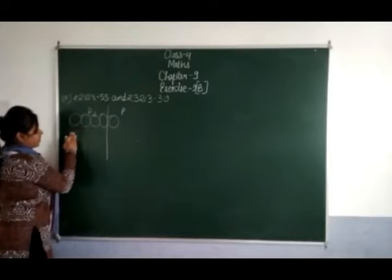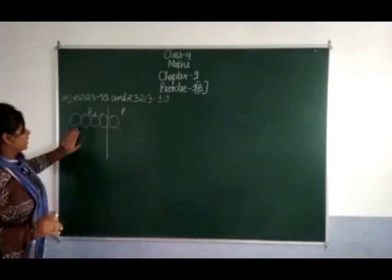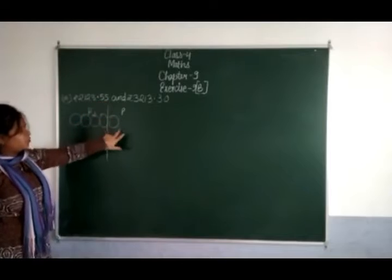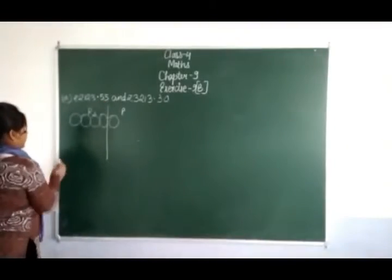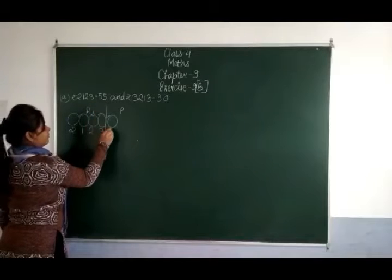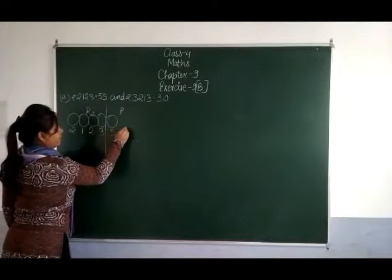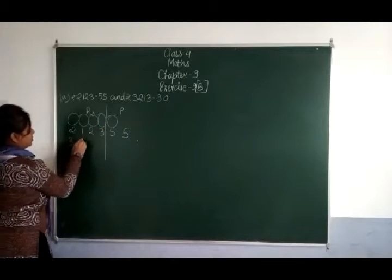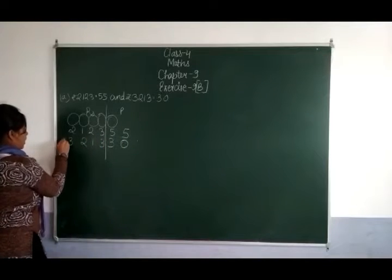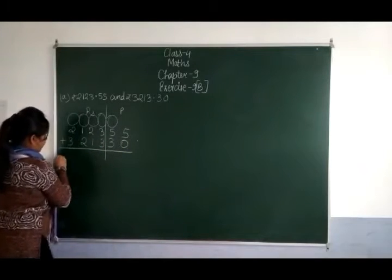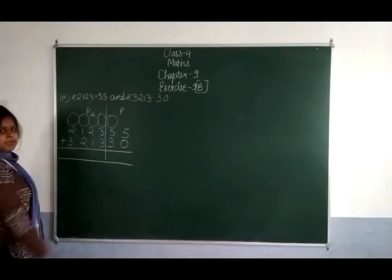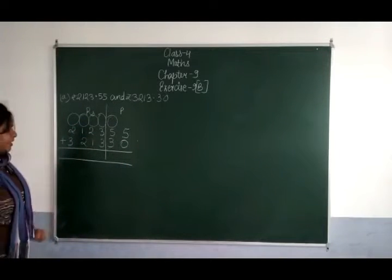We will add 2,123 rupees and 55 paise, and 3,213 rupees and 30 paise. Now what do we do? Add the numbers.